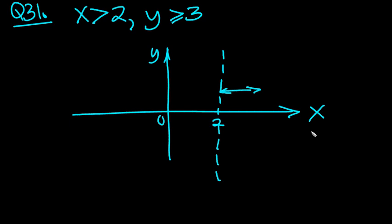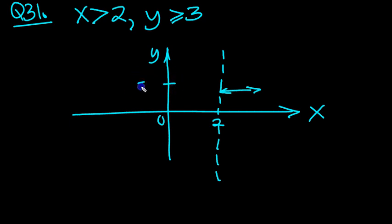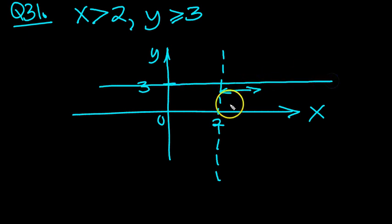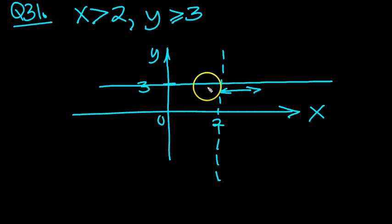Y is bigger than or equal to 3, so let's put 3 on the axis here, and draw the line across the page like so. Bigger than or equal to — so it could touch it — that's why I drew a solid line.